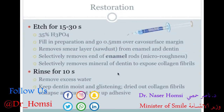For restoration, etch first for about 15 to 30 seconds. Fill in the preparation and go a little bit over the cavo-surface margin to ensure everything is thoroughly etched. This removes the smear layer — basically the sawdust of tooth structure that remains after drilling. The etch selectively removes the ends of the enamel rods and selectively removes the mineral of dentin to expose the collagen fibrils.